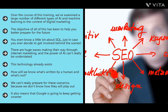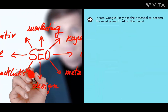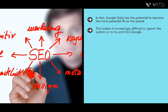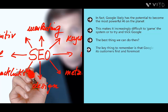We can't fully prepare for those unknown scenarios. For now, as a marketer, focus on Google's move to natural language processing and more human-like interactions. Google used to look for keyword matches but now actually understands the meaning of a website and uses many more metrics to judge quality. Google likely has the potential to become the most powerful AI on the planet, given its huge information access and resources. This makes it increasingly difficult to game the system, so the best approach is to make the best quality content you can.